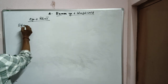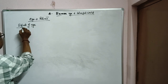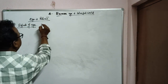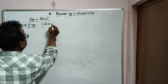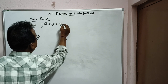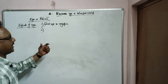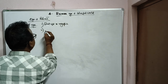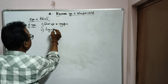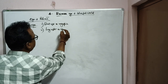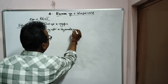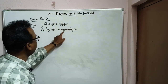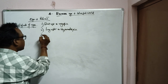The main defects of the eye are: first, short sight or myopia; second, long sight or hypermetropia. These are the two main defects along with a third one.